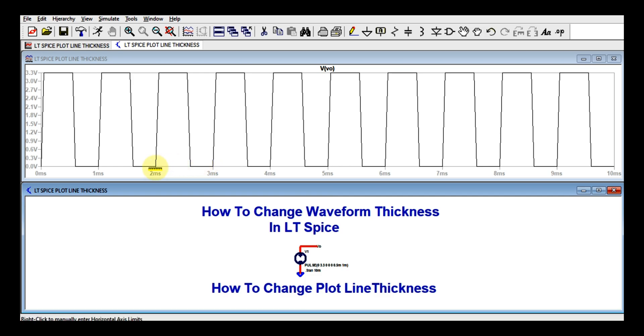This is the waveform of 0 to 3.3 volt. Here you can see there is a small thickness. You can see the waveform thickness is very small and it may not be visible properly to you.